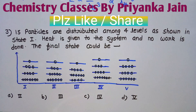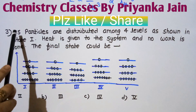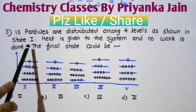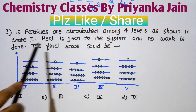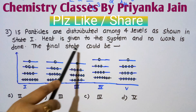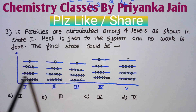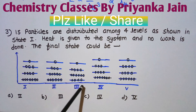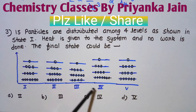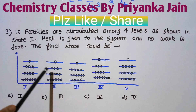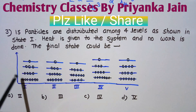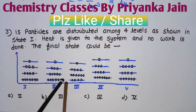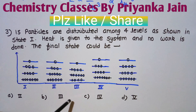Now the third question: 15 particles are distributed among 4 levels as shown in state 1. Heat is given to the system and no work is done. The final state is to be determined from four given options (states 2, 3, 4, and 5). This is the initial state and we must find the final state.